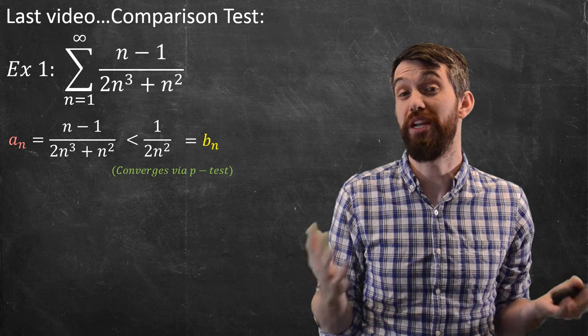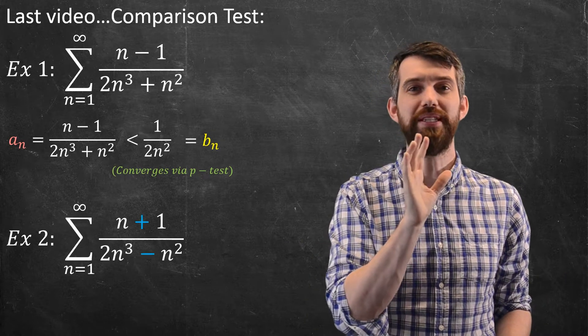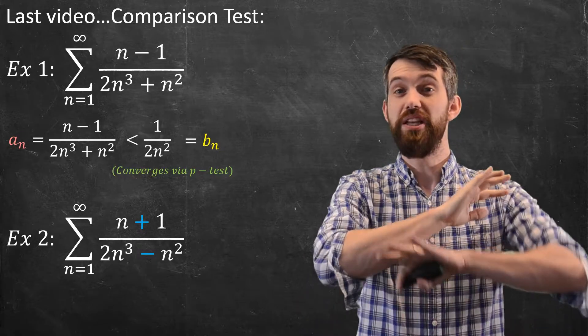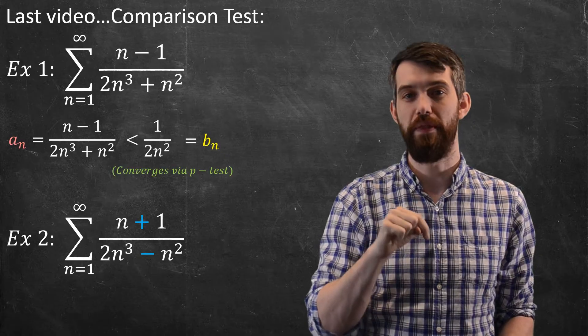The comparison test was pretty nice, but what if I just make a small little twist? I'm going to instead consider in my second example, same exact thing, except it's now a plus on the top and a minus on the bottom.